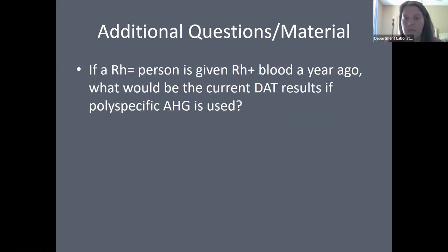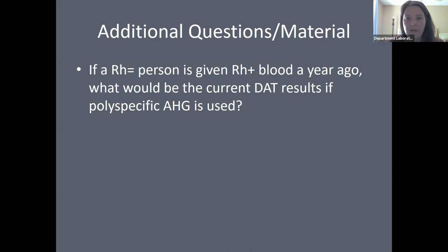Sample question: If an RH negative person was given RH positive blood a year ago, what would be the current DAT result if polyspecific AHG is used? If an RH negative patient was exposed to RH positive blood, they could potentially be alloimmunized and build anti-D. However, if this happened a year ago, that anti-D will not affect their DAT. A year from transfusion, the DAT is going to be negative.